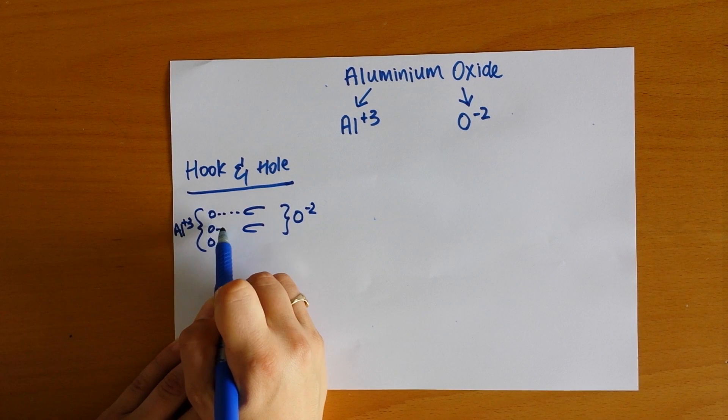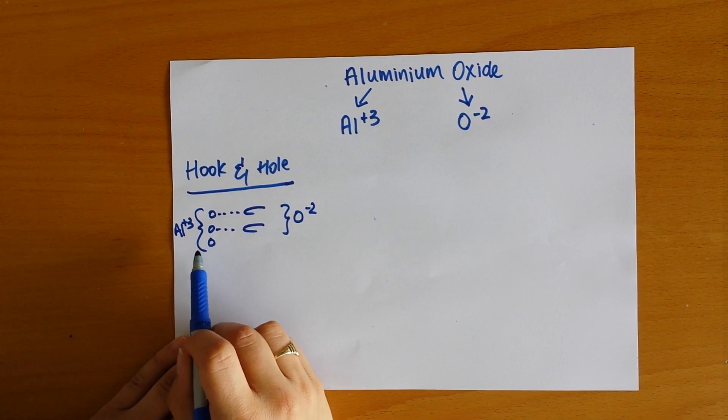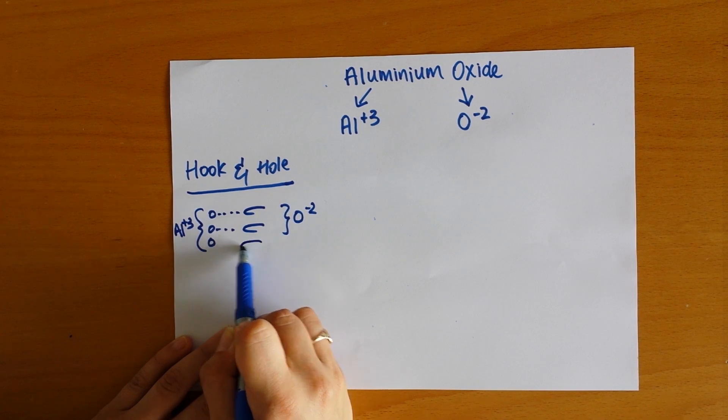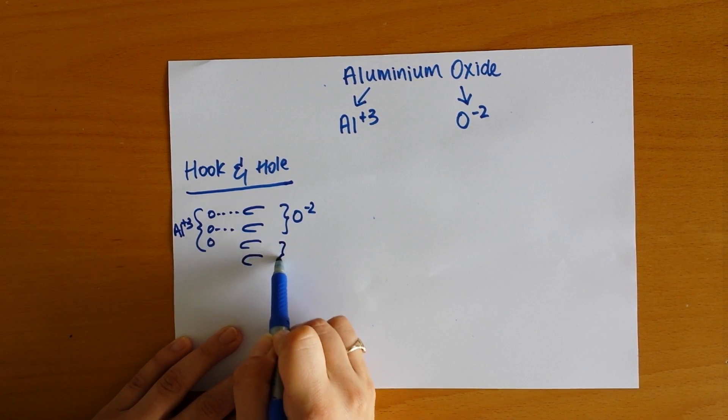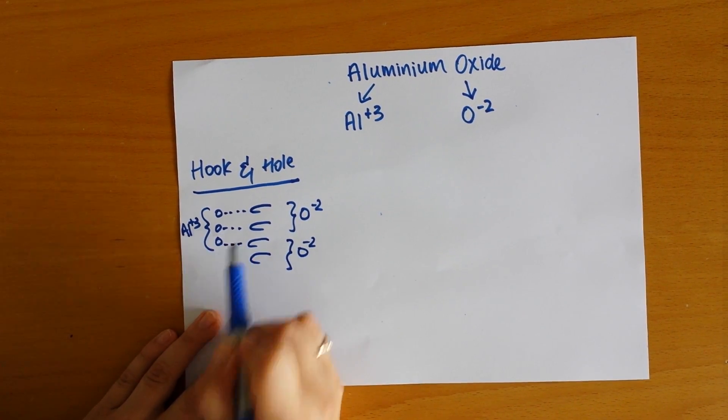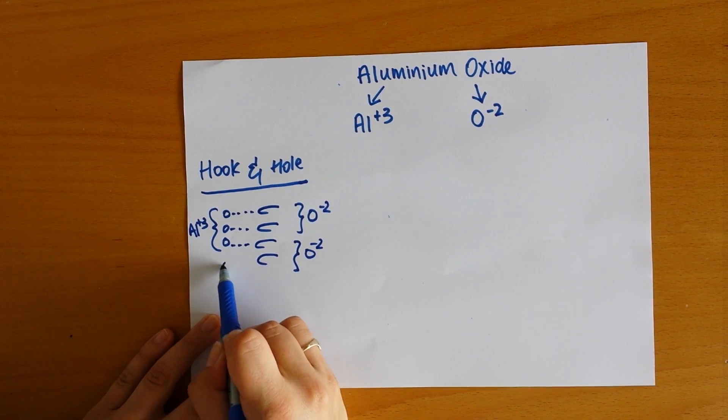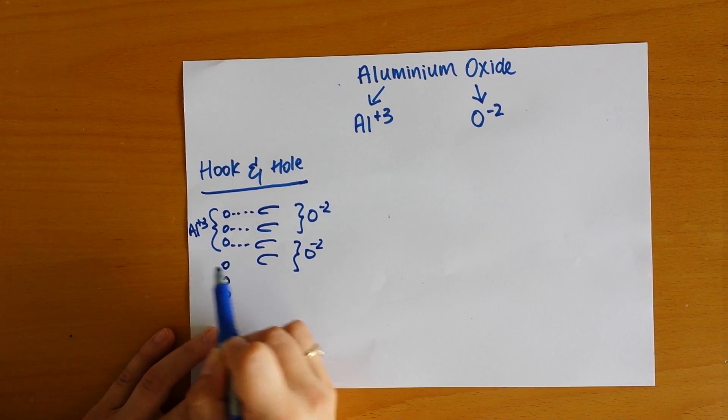So in this case, we can pair up our hooks, but we've still got one hole missing, so we need to add another hook. So in this case we have another 2 minus. Now we've got all of our holes patched up, but we've got a missing hook. So now we need to add in another lot of aluminum.